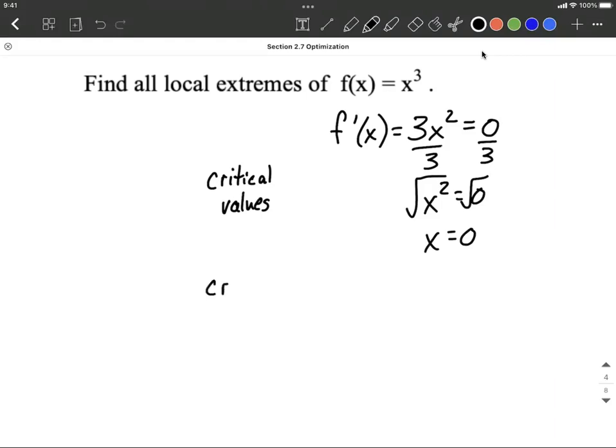All right, next you'd want to think about critical numbers—I'm sorry, critical points. So we'd get a critical point if we evaluate the original function with the critical number. So 0³ works out to be 0, so (0,0) is our critical point.